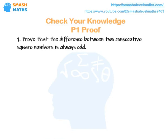We've got to prove that the difference between two consecutive square numbers is always odd. There's always a choice of methods when it comes to proof, but this one we're going to go with an algebraic approach.